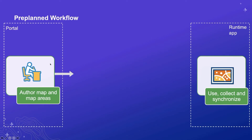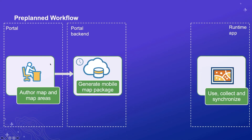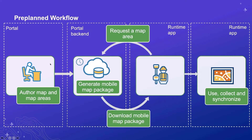These can be polygons or extents, and they are packaged up on an interval by the portal backend. You may specify four or five of these areas; the portal will create them in the background and you have full control over the schedule. These map packages are then available so that when a runtime map needs to go offline, it can simply see which packages are available, pick the appropriate one, and download it. There's no generation of data required at the time the app needs to pull data offline, making this very scalable. Hundreds or thousands of users can download the same package to work offline, collect data, make edits, and synchronize.